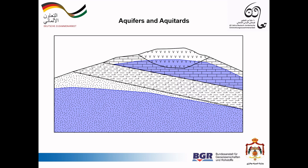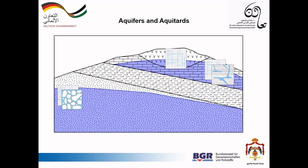In Jordan there are three main aquifer systems: the shallow aquifer system, the middle aquifer system, and the deep aquifer system.